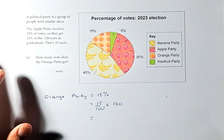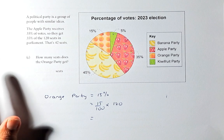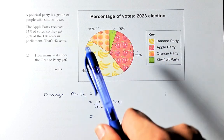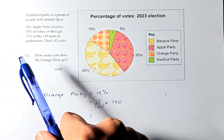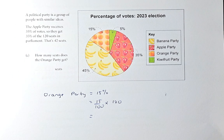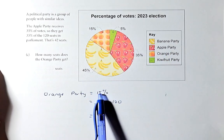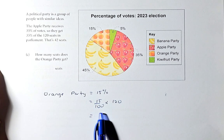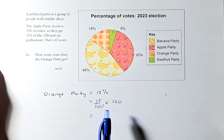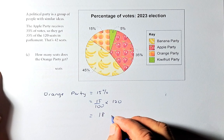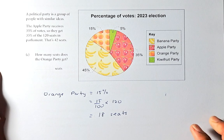Now let's do question 5C. A political party is a group of people with similar ideas. The Apple party receives 35% of the votes, so they get 35% of the 120 seats in parliament — that's 42 seats. The question is: how many seats does the Orange party get? The Orange party got 15%, so 15% of 120 is 0.15 multiplied by 120, and the answer is 18 seats. That is the answer to question 5C.